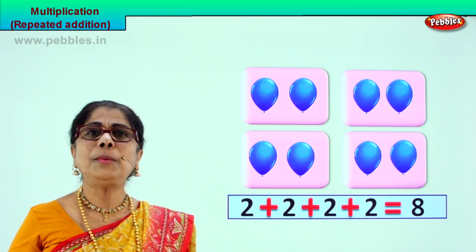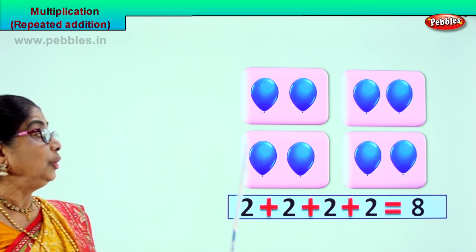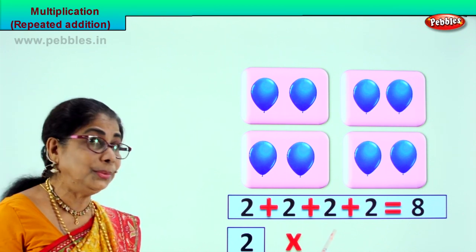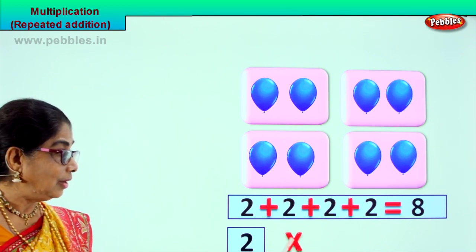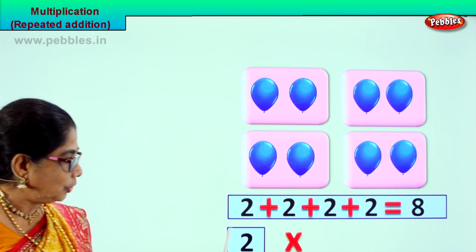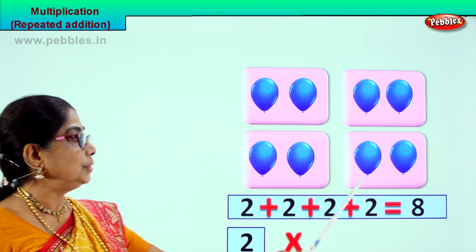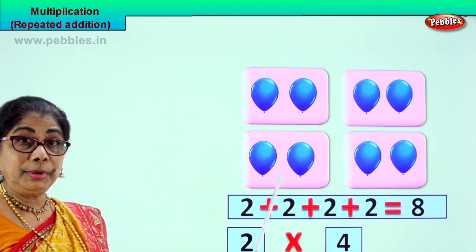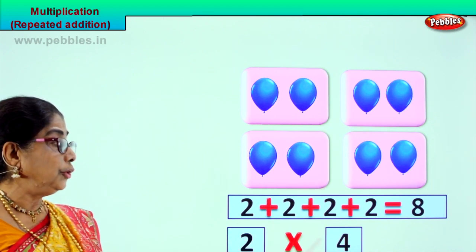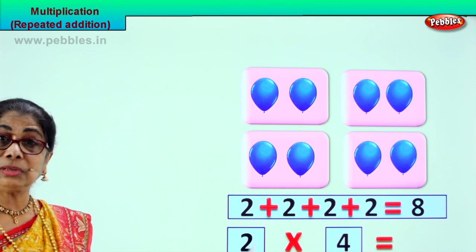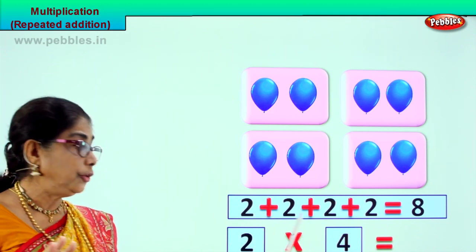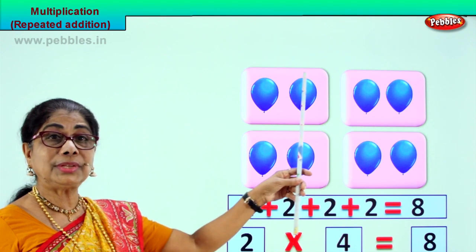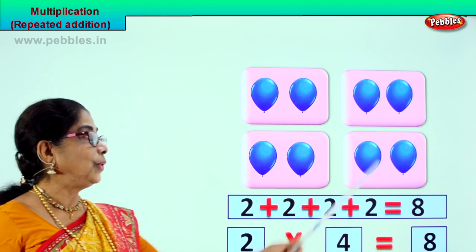Now, what is the sign for multiplication? Look, you have one, two, three, four boxes. This is the plus sign — plus in a different way. Two into one, two, three, four. Four times. Two in one box. How many boxes are there? One, two, three, four. So, two into four boxes. Two balloons in each box, number of boxes four. Two into four is equal to eight. Two, four, six, eight. You know the tables now.